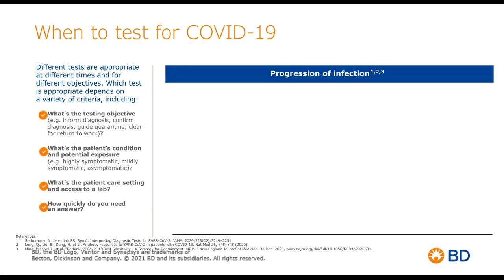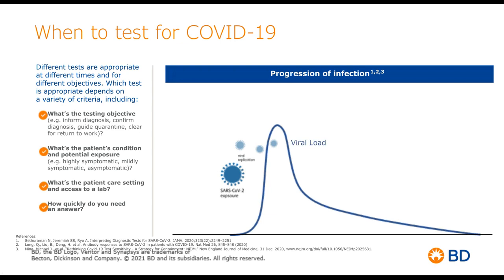We're focusing today on point of care testing, also referred to as antigen testing. Before we start talking about antigen testing, I want to make sure we're clear on what this is. You've heard about a couple of different types of tests through the media: molecular testing, also referred to as PCR testing, and antigen testing, also called rapid testing or point of care. To explain the difference, I like to use the example of a patient that has a SARS-CoV-2 exposure. As a patient is exposed to that virus, it begins to replicate, and as more virus becomes present, we refer to that as viral load.